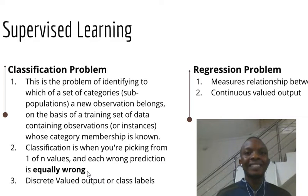If you're asked is this a classification or regression problem, in classification just check whether your chances of getting it right increases as you make mistakes. If each wrong prediction is equally wrong, then it's classification. It has discrete valued outputs or class labels.